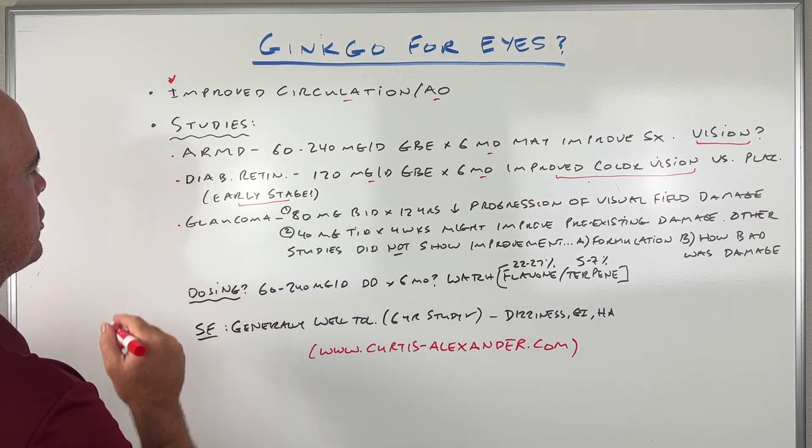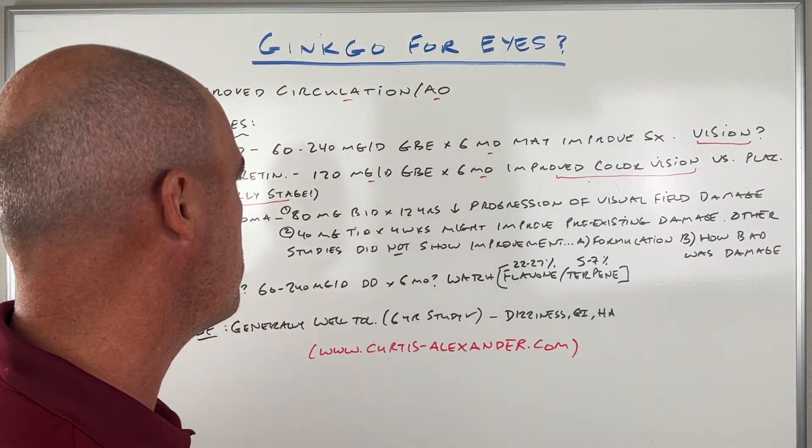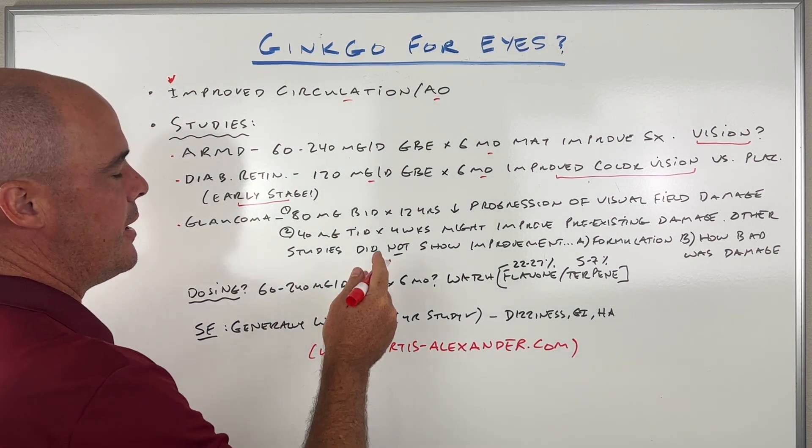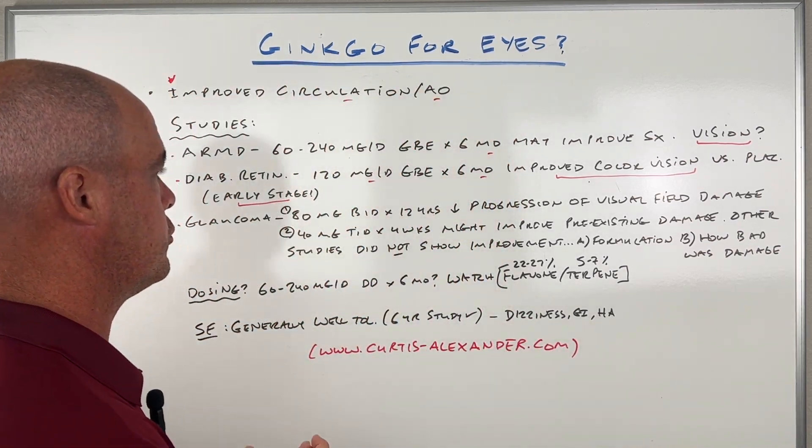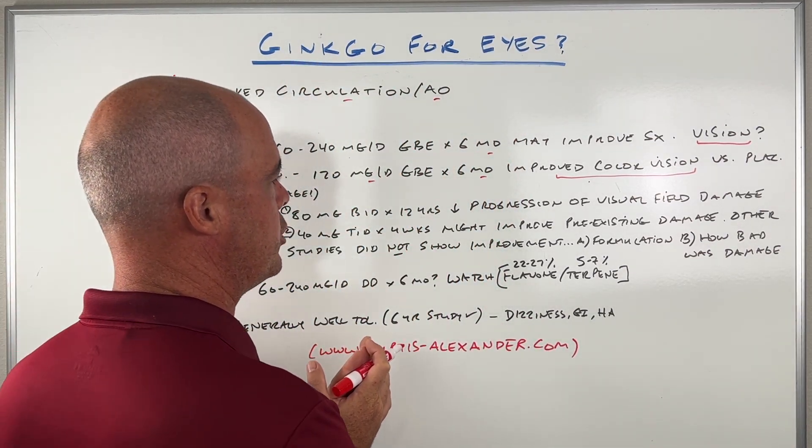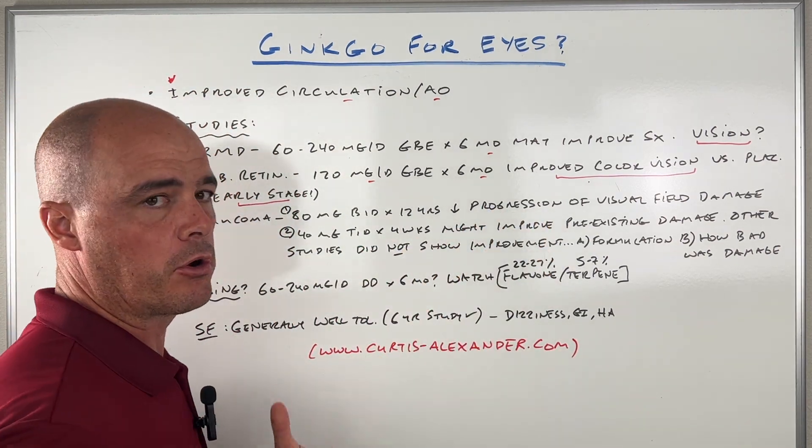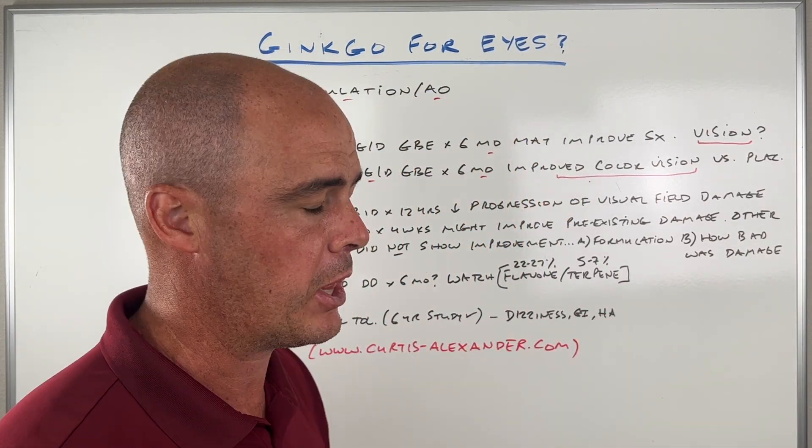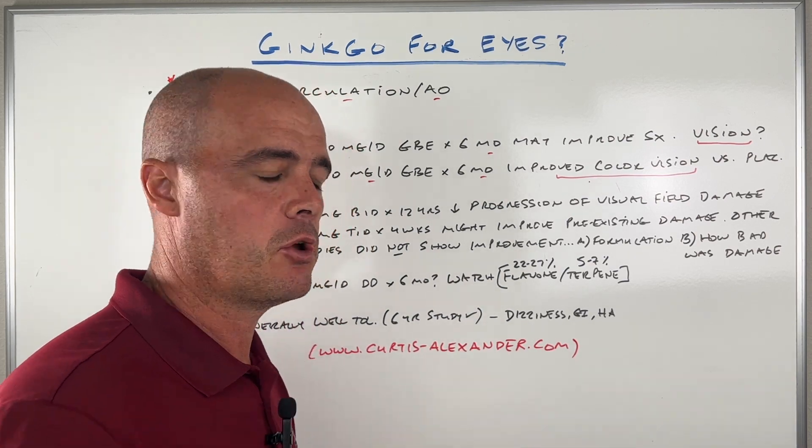The last couple of studies involved glaucoma, again early stage glaucoma. First study gave 80 milligrams twice a day, and this was an observational study. So these folks were using it for up to 12 years, which is extremely long. They did find that there was a decrease in the progression of the visual field damage that these people had. So didn't cure anything, didn't do anything like that, but it did slow the progression.